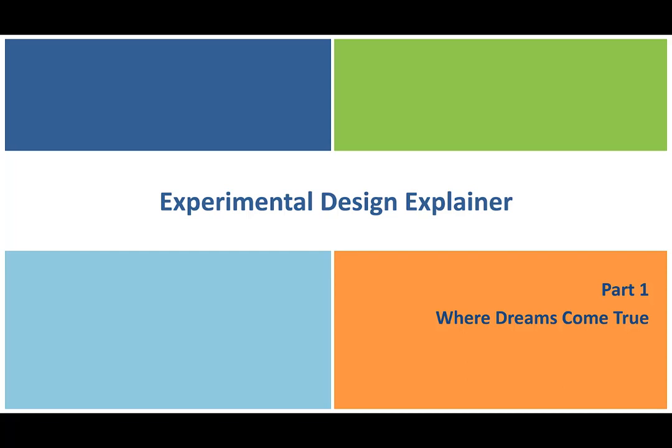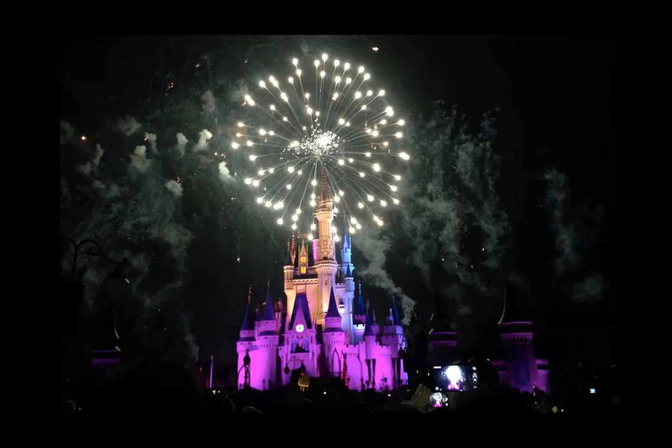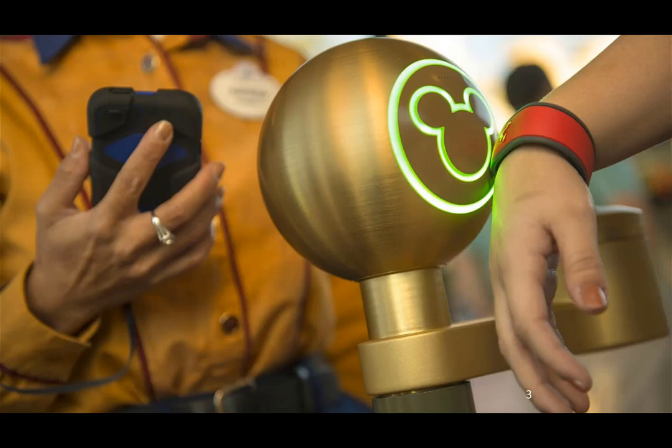This experimental design explainer is coming at experimental design from the angle of people that are used to working with data and hadn't really thought about where that data might have come from. We're going to start with a real example, in this case from Disney World, where Disney has invested tons of money in order to get people into their parks as efficiently as possible.